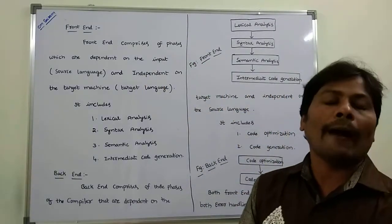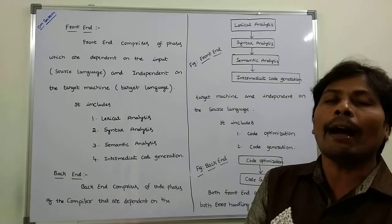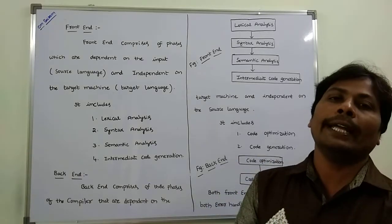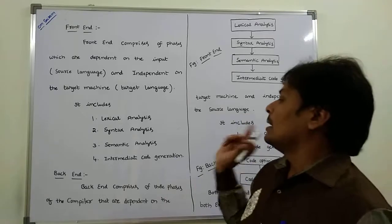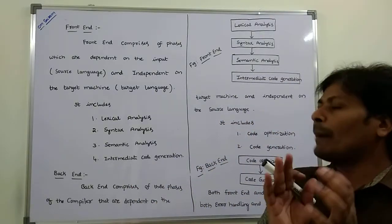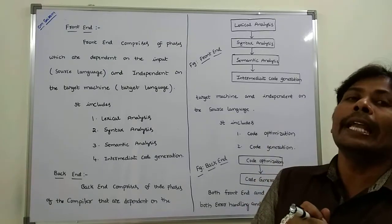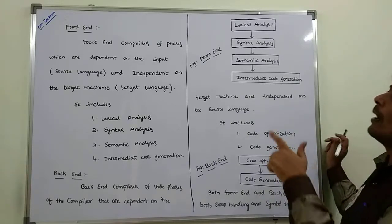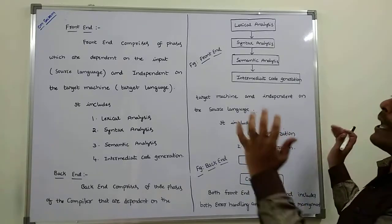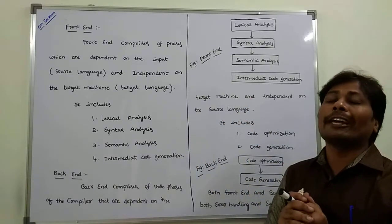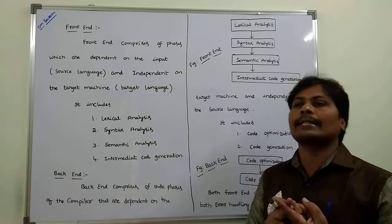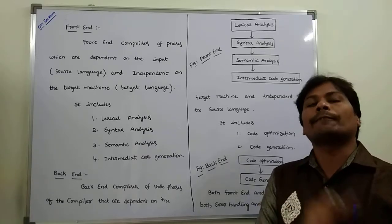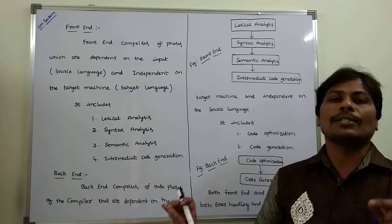The main difference between frontend and backend: frontend depends only on the source language and is independent of the target language, while backend depends only on the target machine and is independent of the source language. When combining frontend and backend, we get all six phases of the compiler: lexical analysis, syntax analysis, semantic analysis, intermediate code generation, code optimization, and code generation.